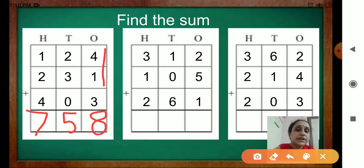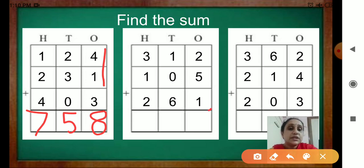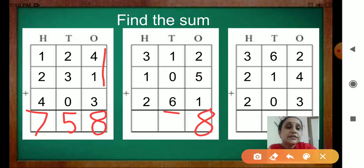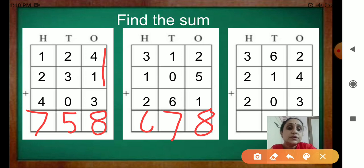Now the next one. See the numbers: 312, 105, 261. Put the plus sign. Now start adding. 2 plus 5 is 7. 7 plus 1 is 8. Now have a look at the 10s place: 1 plus 0 is 1, and 1 plus 6 is 7. Now come to the 100s place: 3 plus 1 is 4, and 4 plus 2 is 6.